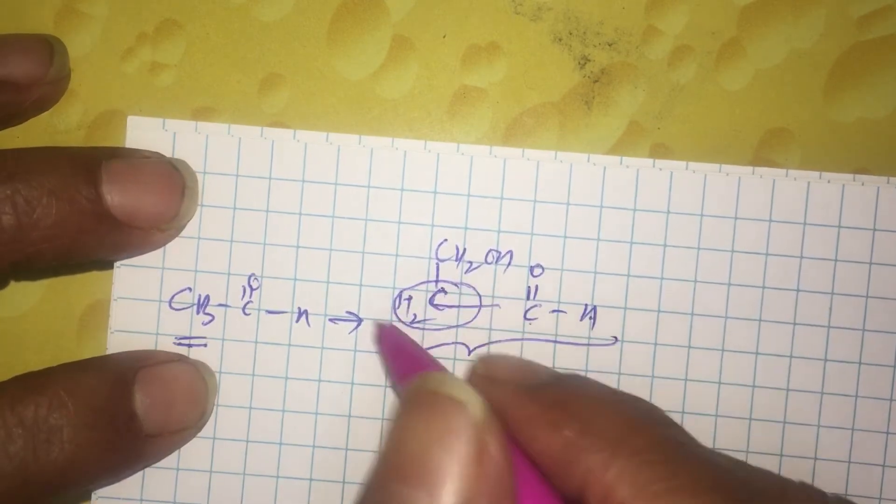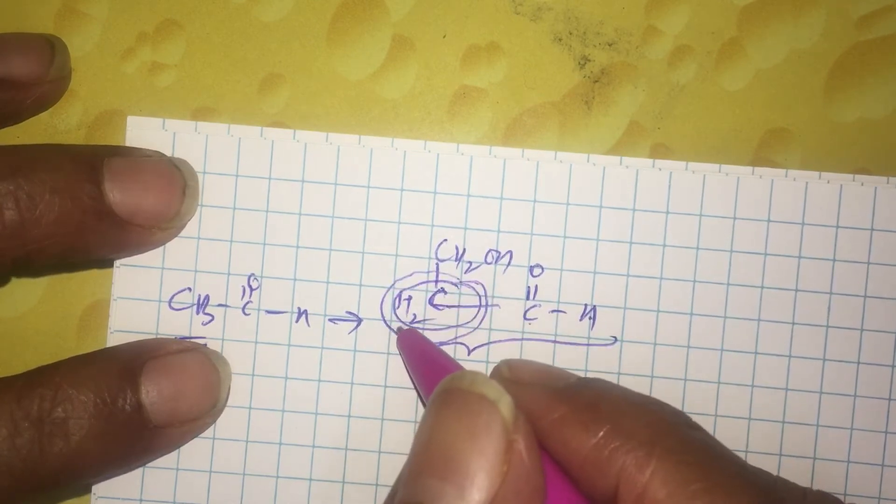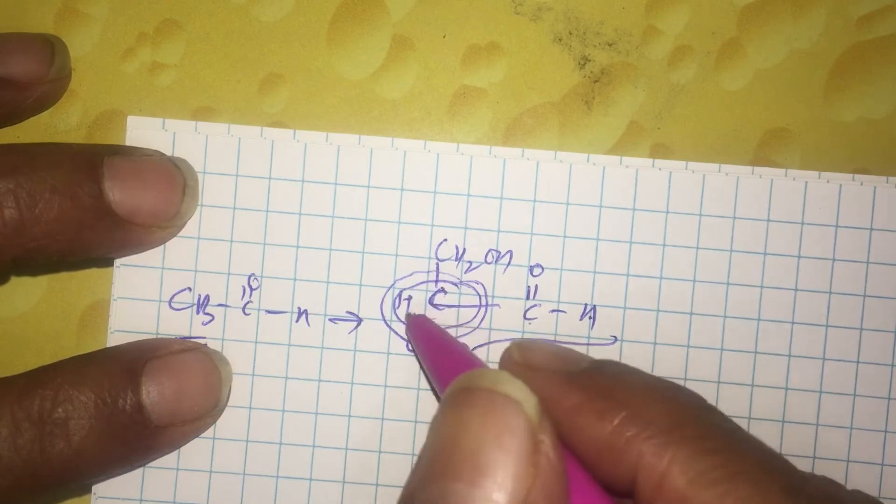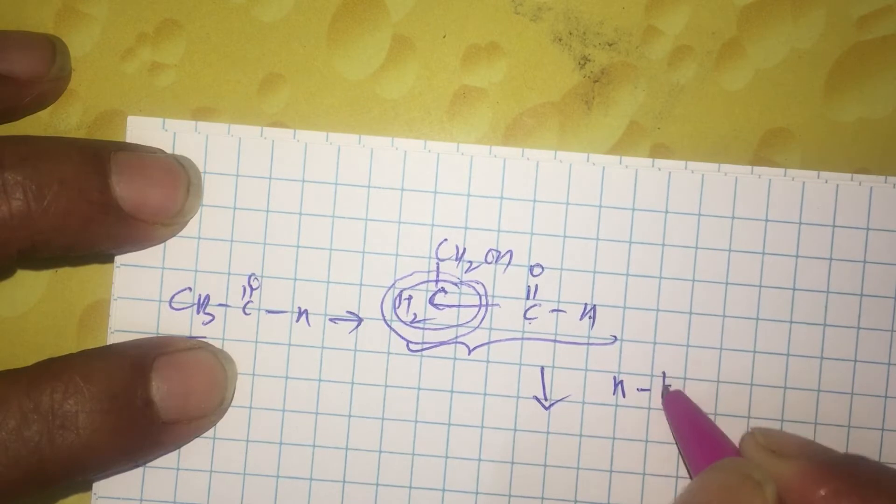So, the saga continues. The saga of continuation of CH2 into another CH minus continues. So, one more cross-aldol becomes possible with another formaldehyde.